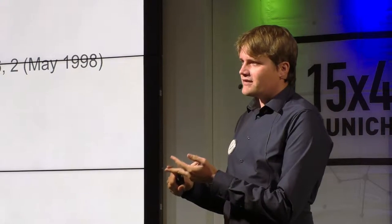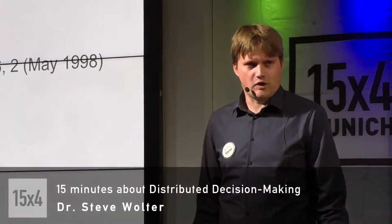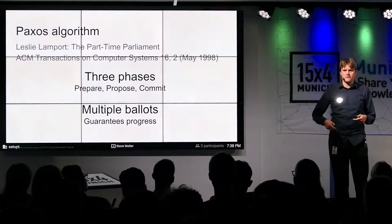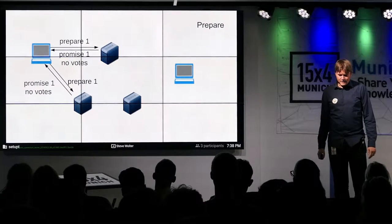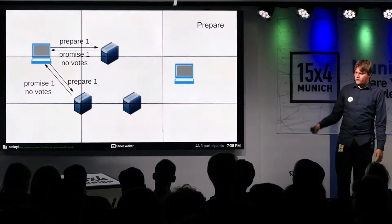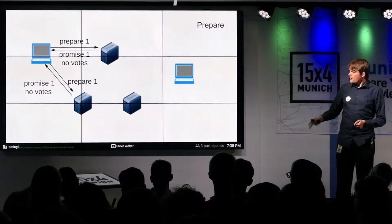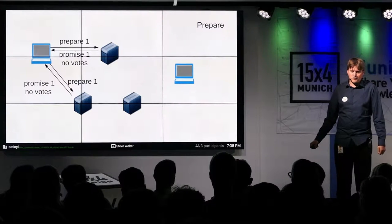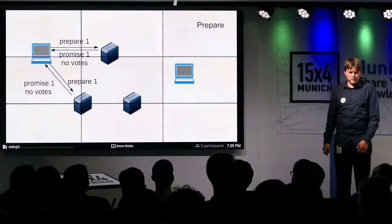First you prepare a vote, then you propose a value, and when you get enough acceptance for the proposed value you commit it. Progress is ensured by doing multiple ballots — each ballot is one round of voting through these three phases. If one ballot fails for any reason — messages don't arrive, computers crash — we can just start another ballot. In the prepare phase, the leader sends prepare messages to the servers for ballot number one. Since the servers haven't promised anything to anyone yet, they promise to participate in ballot one and tell the leader they haven't voted yet. The leader gets two promises and moves to phase two.